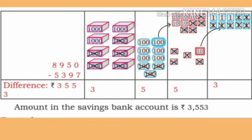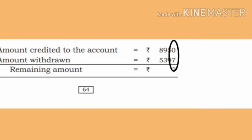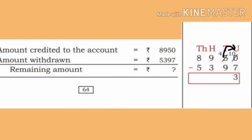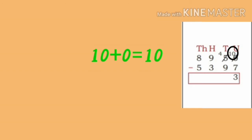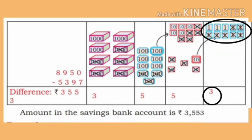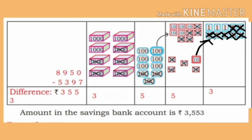First step: in the Minuend, we have 0 in the units place. It is not possible to subtract 7 from 0. So borrow 1 ten from the tens place and add to the units place. That is, 10 plus 0 is 10 units. We get 3 remaining in the units place after subtracting 7 from 10.